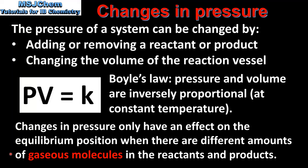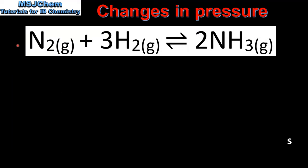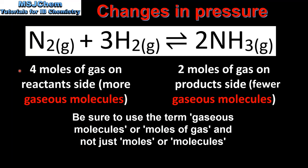Next we look at some examples. The reaction we look at is the Haber process, in which nitrogen and hydrogen react together to form ammonia. In this equation we have 4 moles of gas on the reactant side and 2 moles of gas on the product side. This means on the reactant side we have more gaseous molecules, and on the product side we have fewer gaseous molecules.